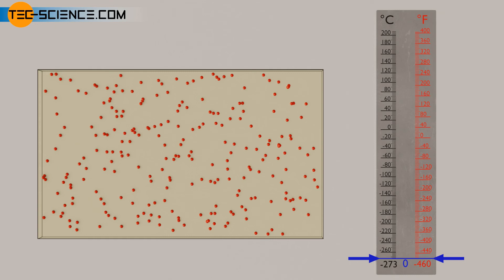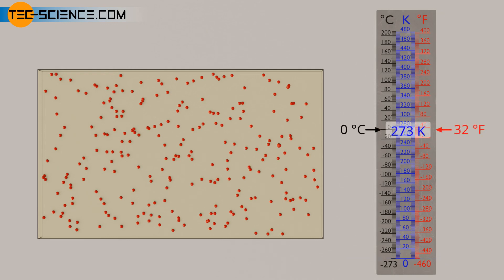Absolute zero is therefore designated as zero Kelvin. Like the Celsius scale, the Kelvin scale is divided into a total of 100 subdivisions between the melting point of water, which is 273 Kelvin, and boiling point of water, which is 373 Kelvin.